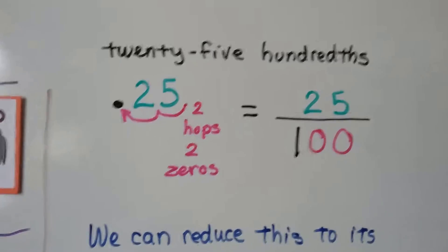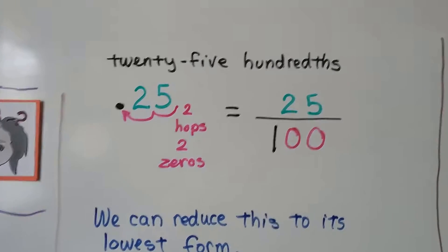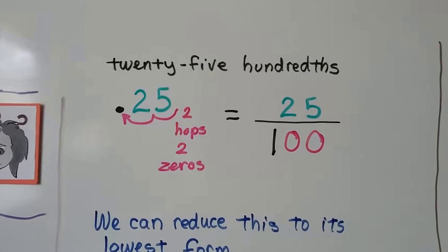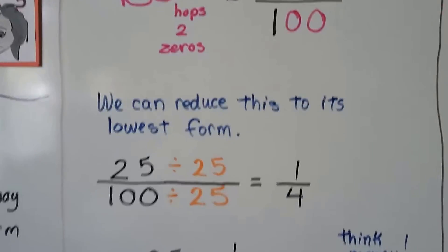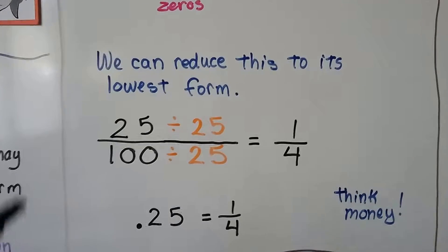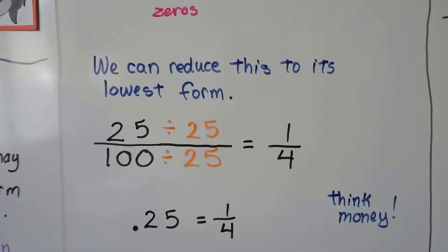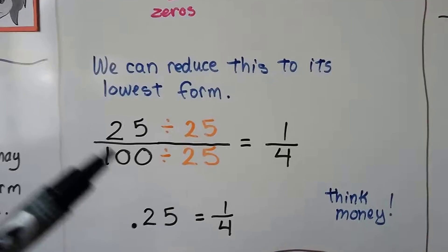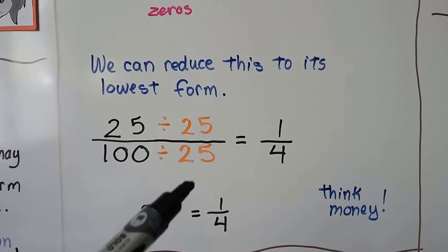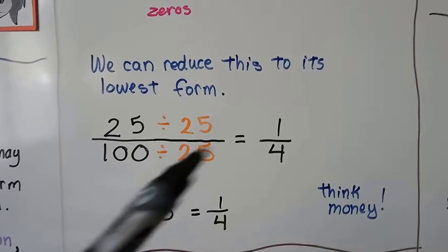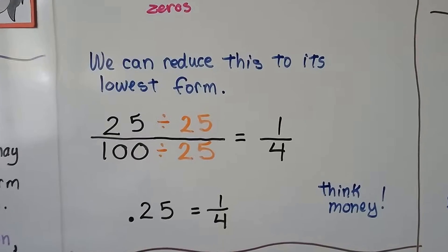Here we have 0.25 — 25 hundredths. There are two hops to the decimal place, so there are going to be two zeros in the denominator. We can reduce it to its lowest form. If you think of money and how many quarters are in a dollar, we divide 25 by 25 and 100 by 25 and we get one-fourth. The larger the number you divide both by, the faster you'll get to the reduced value. So 0.25 equals one-fourth — 25 cents is a fourth of a dollar.